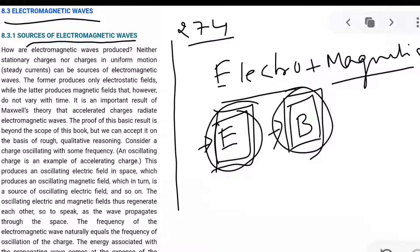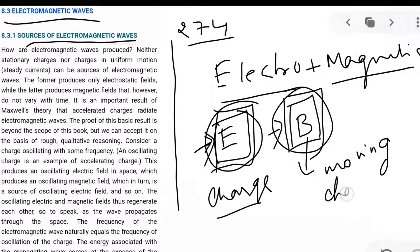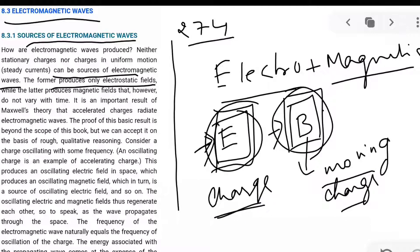The source of electric field is a charge, and the source of magnetic field is a moving charge — a moving charge produces a magnetic field, and moving charge means current. Neither stationary charges nor charges in uniform motion can be sources of electromagnetic waves, because the former produces only electrostatic field, while the latter produces only magnetic field. Electromagnetic waves require both electric and magnetic fields.